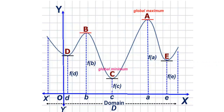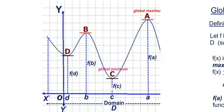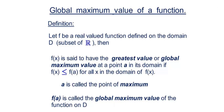So roughly we have understood the terms global maximum and global minimum. Let us see the formal definition for the same. The global maximum value of a function: let f be a real valued function defined on the domain D. Then f(x) is said to have the greatest value or global maximum value at a point A in its domain, if f(x) is less than or equal to f(a) for all x in the domain of f(x).